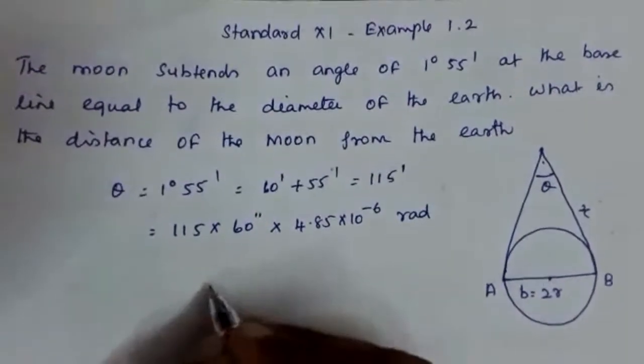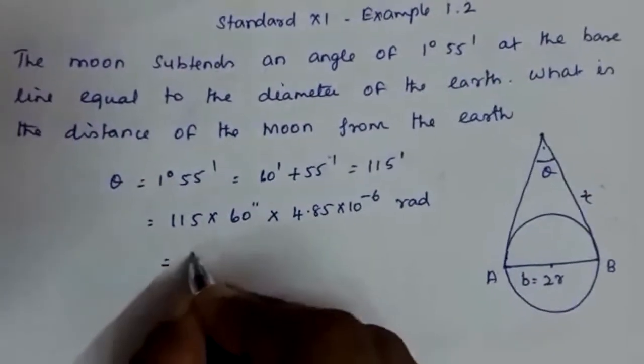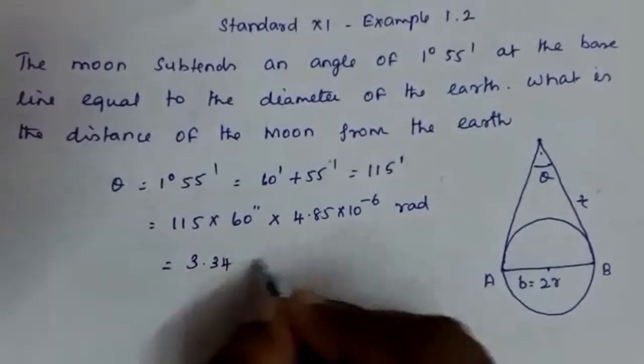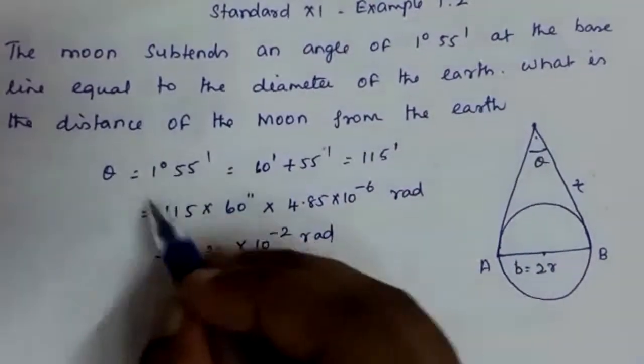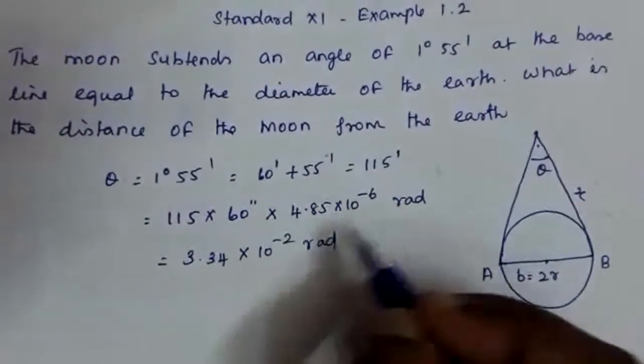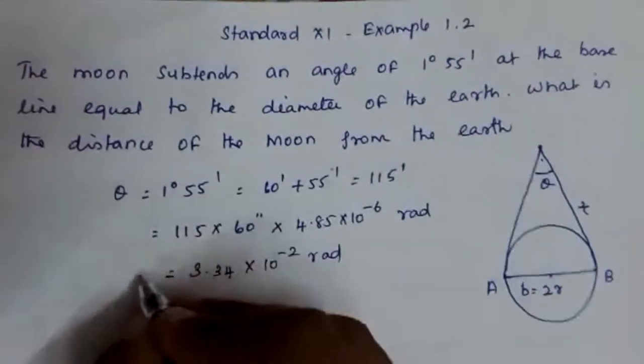So what will we get here? This value will be 3.34 into 10 raised to minus 2 radian. We can't keep the value in degree and proceed, so we have to convert it into radian value.